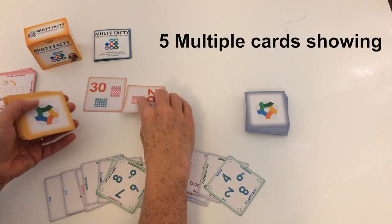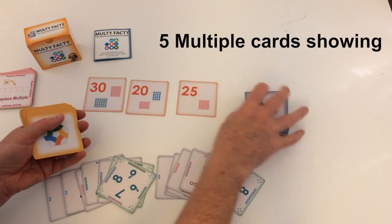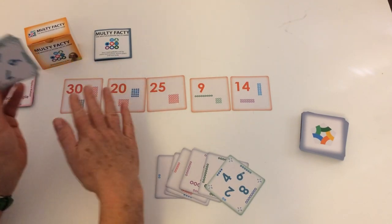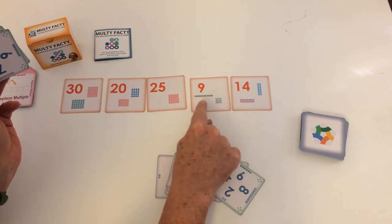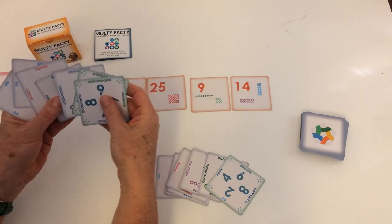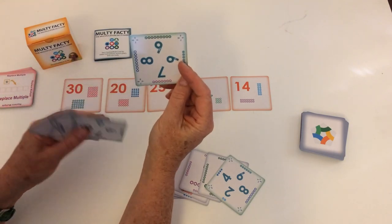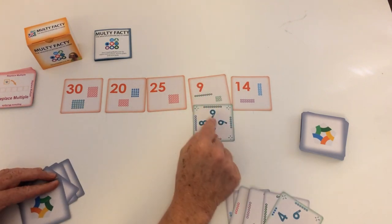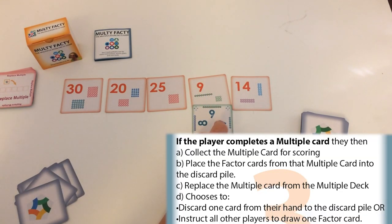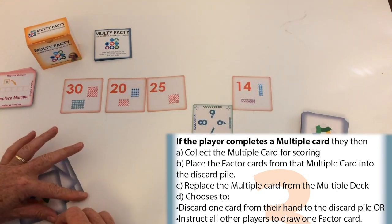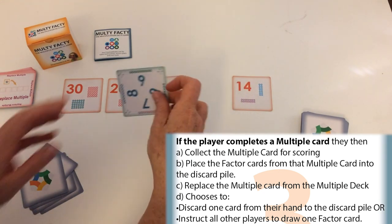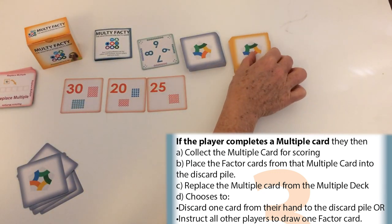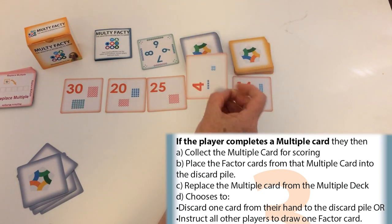And we also shuffle the multiple cards. So we have five multiple cards showing. Now the first player looks at their hand and they look at what's here and they can see if they've got a nine they can complete that multiple straight off. And they do because this is a wild card that can be nine. So they put down the nine which completes that particular multiple. So they take this multiple which is going to be used for scoring later. This goes into the discard pile. We turn over another multiple.